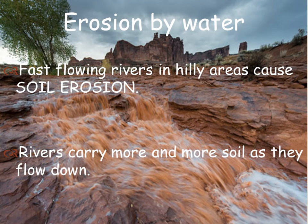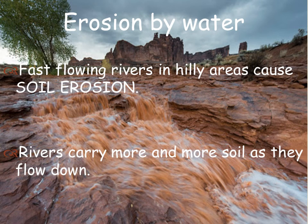There are three ways in which soil erosion can take place. Erosion by water: as rainwater flows over the land, it carries a part of the soil with it, resulting in soil erosion. Soil erosion by water is greater in hilly areas as water flows down faster. Fast-flowing rivers, particularly in hilly areas, can cause soil to be eroded from the banks, and thus the rivers carry more and more soil as they flow down.